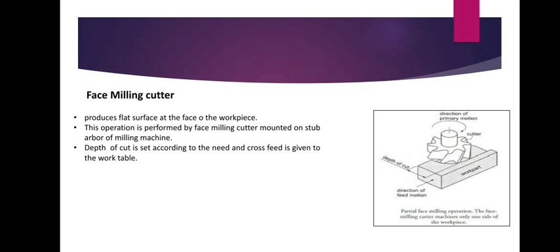The workpiece moves horizontally and material is removed in the form of chips. This operation is performed by face milling cutters mounted on the stub arbor of the milling machine. Depth of cut is set according to need and cross-feed is given to the work table. In the next video we will discuss milling operations. Thank you.